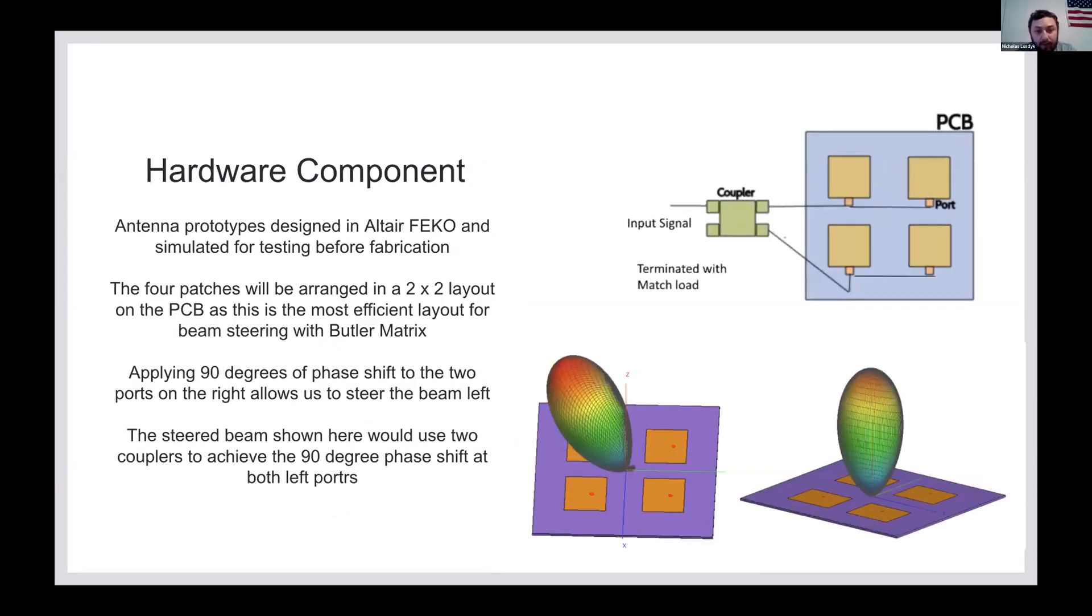I'm going to go over the hardware component of our design. We designed a 2x2 antenna as you guys know. The way we did this was with a software called Altair FICO. It's kind of a CAD software. It also has a post CAD thing after it runs simulations. The simulations are on the bottom right, and they show the radiation beam going straight up and then also the radiation beam steered, as Joseph talked about in the previous slides. We used FICO for doing that. There will be four patches in a 2x2 layout. This is the most efficient layout that we could come up with because it's how Butler matrix typically works for beam steering.